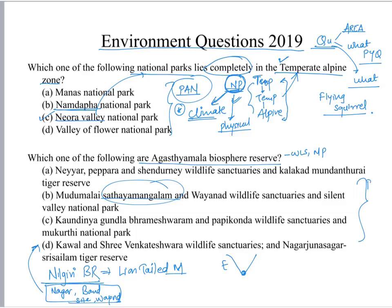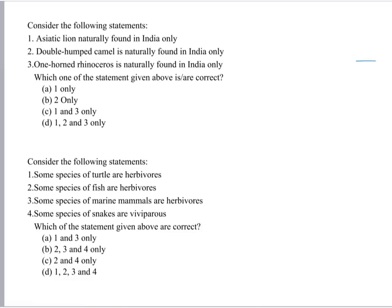In this protected area network, we should know various biosphere reserves in India, the national parks and wildlife sanctuaries included in them, the animal species, climate, and various physical aspects. The third question is regarding the Asiatic lion, double-humped camel, and one-horned rhino — this question is mainly about biodiversity, specifically fauna.